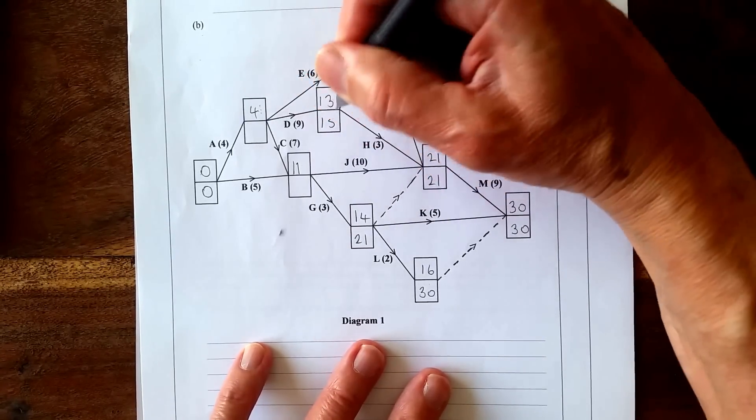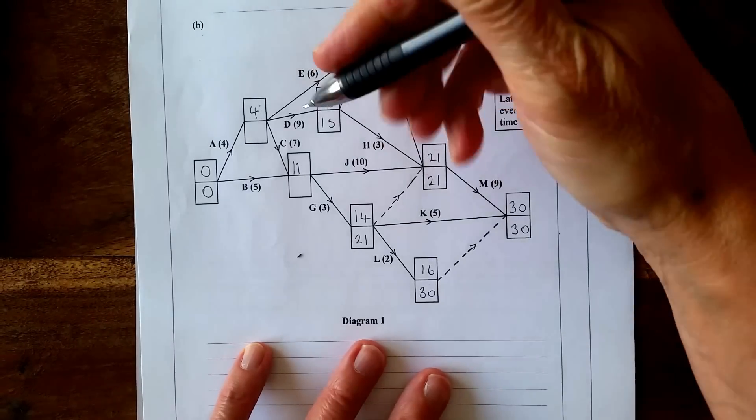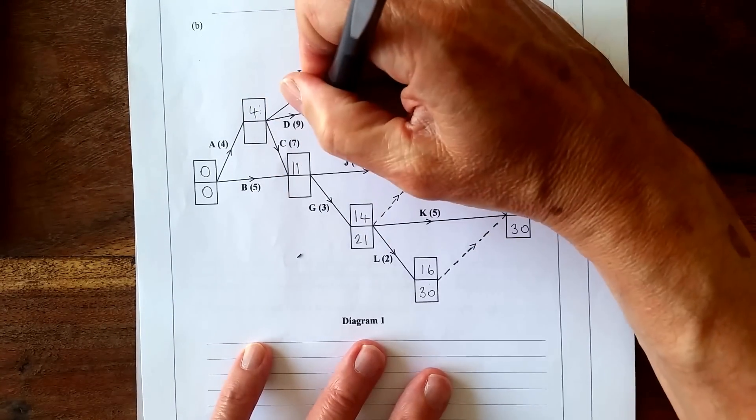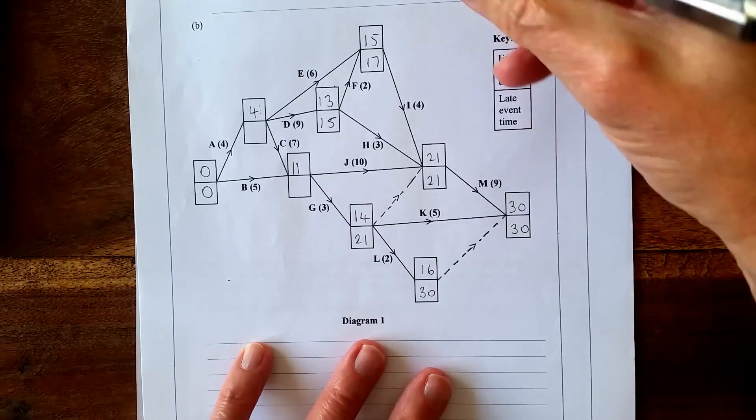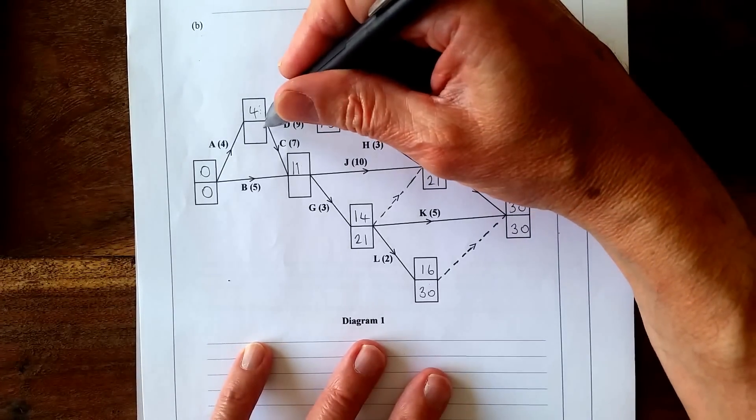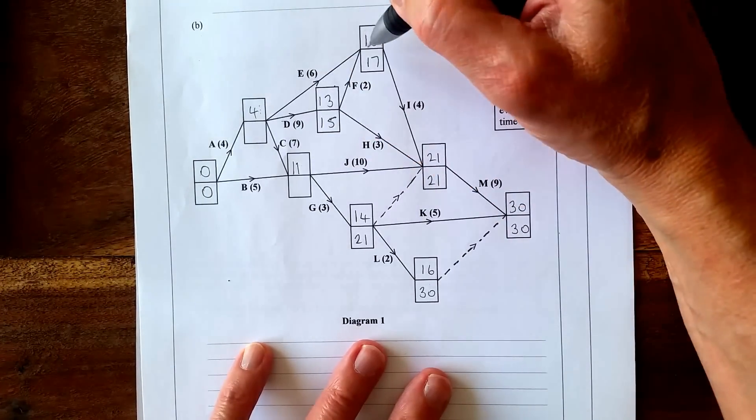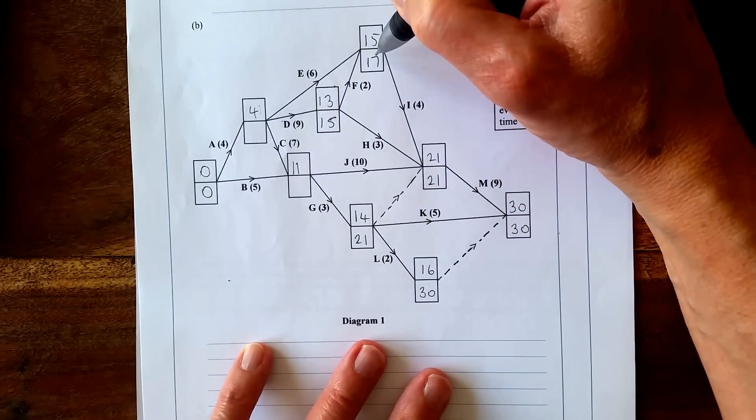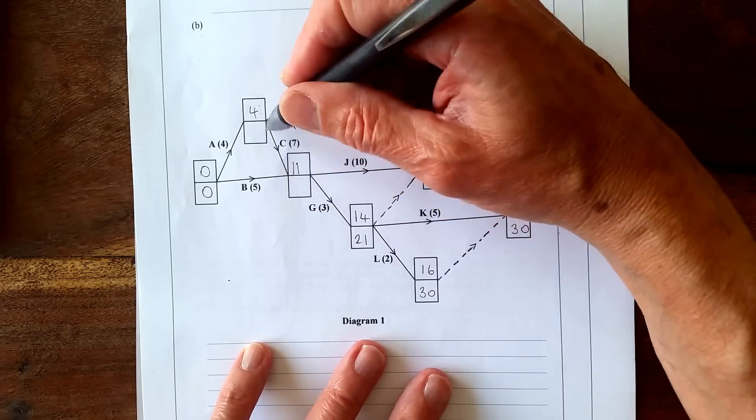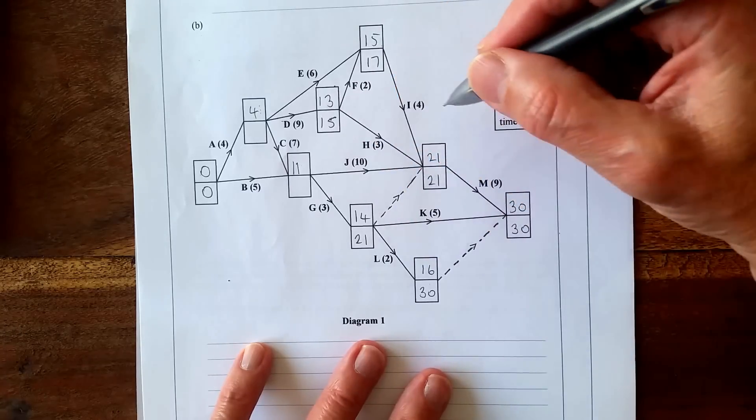15 subtract 9 is 6, but 17 take away 6 is 11. This one might be smaller, so we'll have to do this one first.